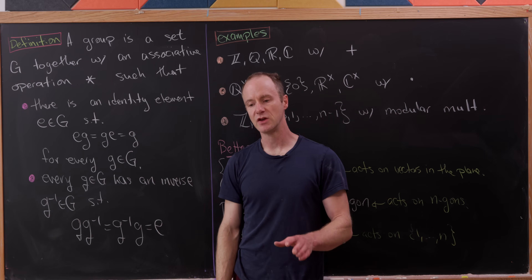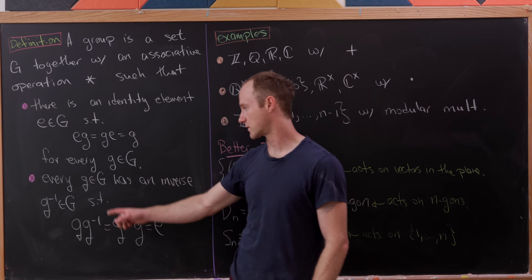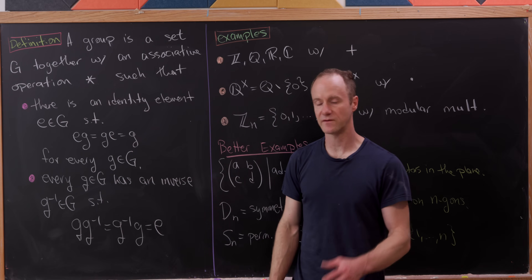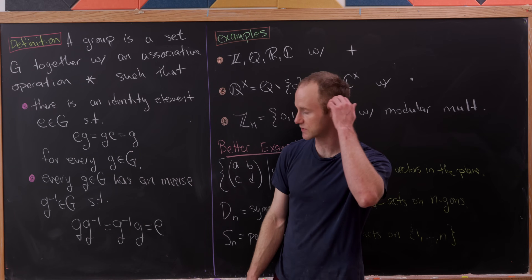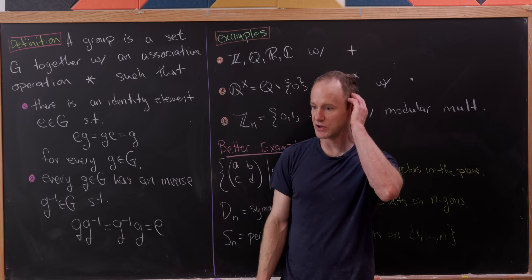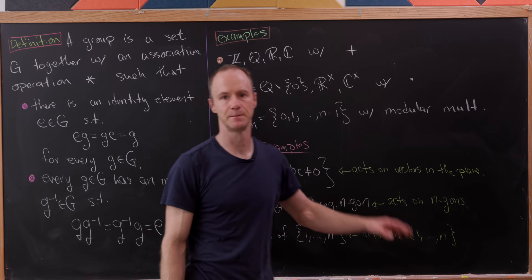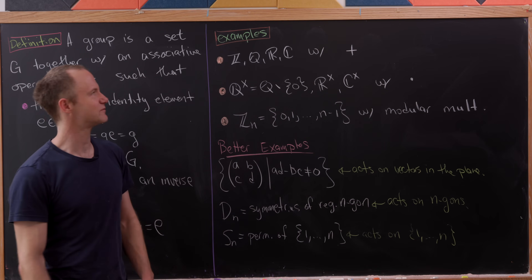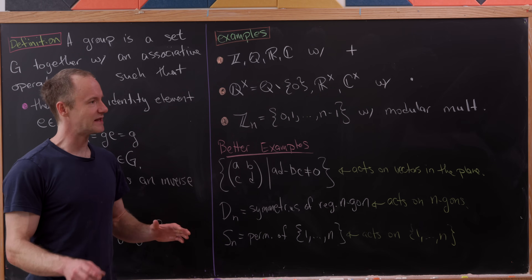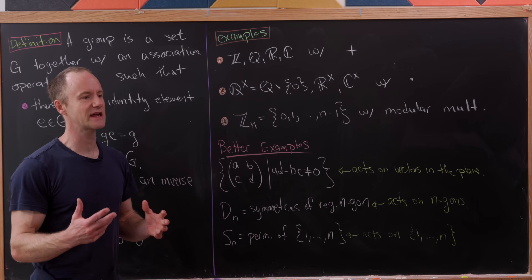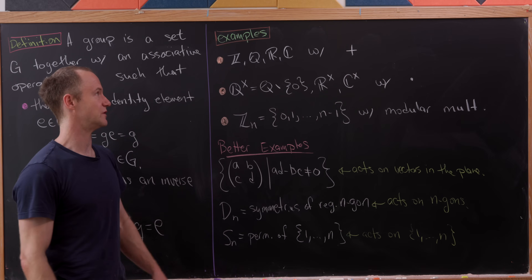You also have an inverse for every group element. For all G, you can find an inverse element, G inverse, so that when you combine these elements you get back to the identity. Let's look at some examples — some that are arithmetic and some that really get to the heart of what most groups are about.